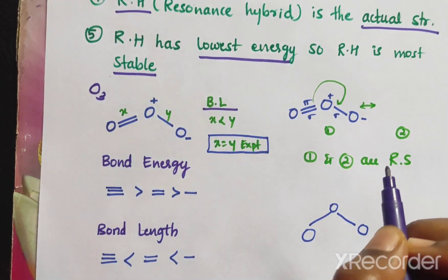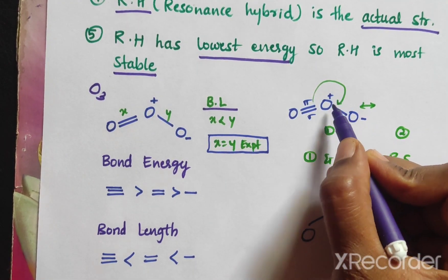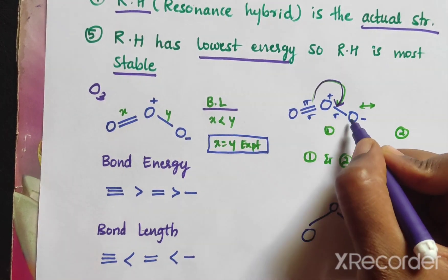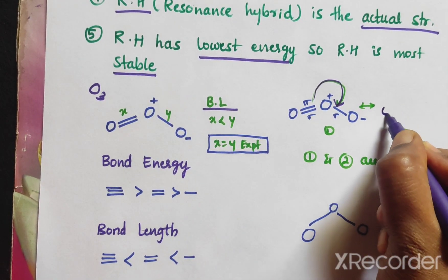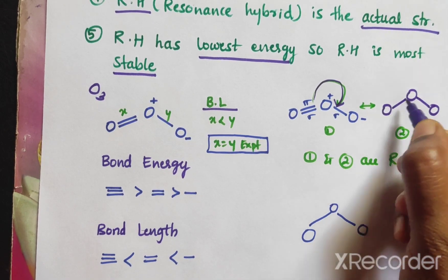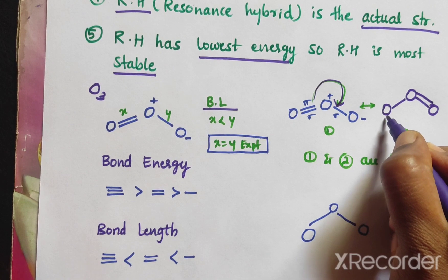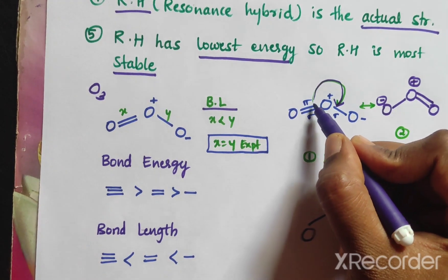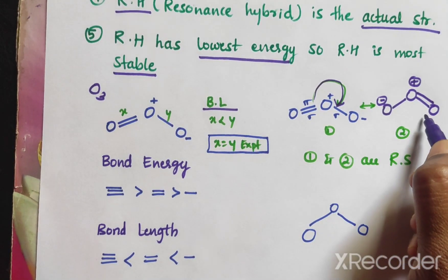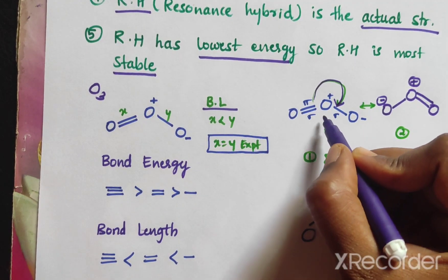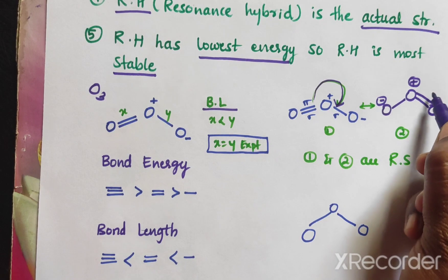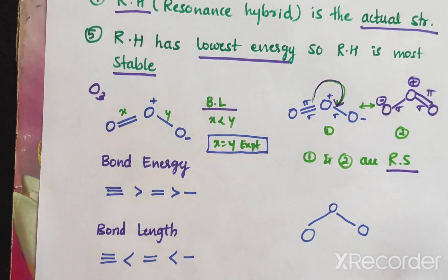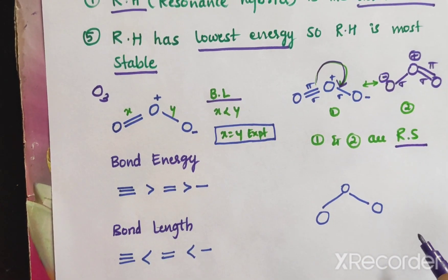This is structure 1, our first resonance structure of O3. Structure 1 and structure 2 are the resonance structures of ozone, each containing pi bonds and sigma bonds.